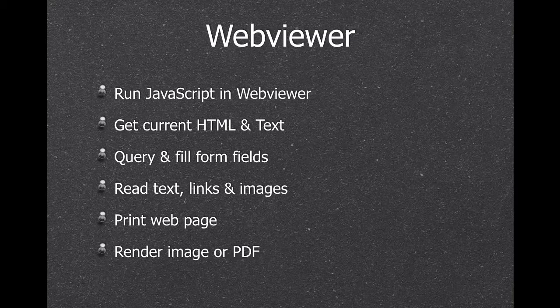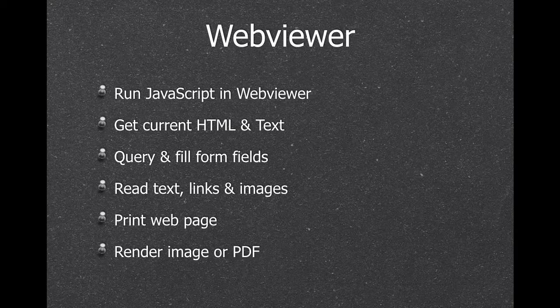We can work with the web viewer — run JavaScript in it, for example making a pin on a Google Map at a specific address. You can get the HTML and text shown in the web viewer, fill form fields and submit them without typing. We can get all text, links, and images on the page, and print the web page to get a picture or PDF.